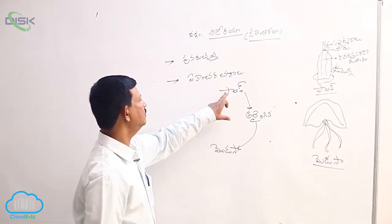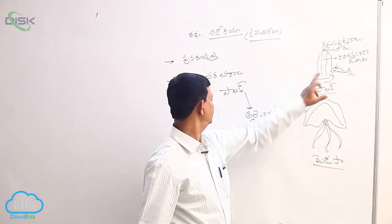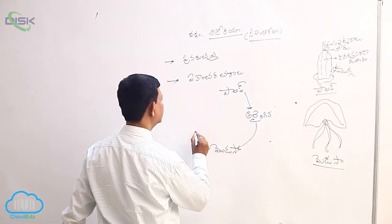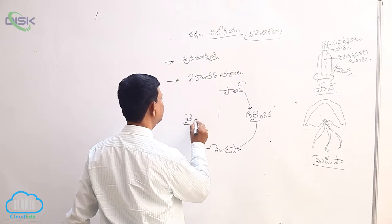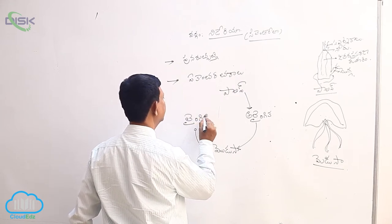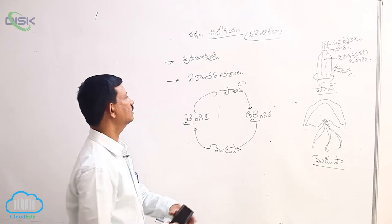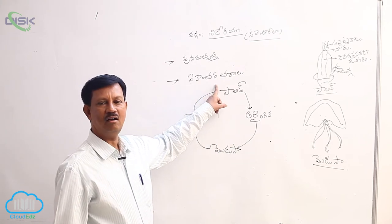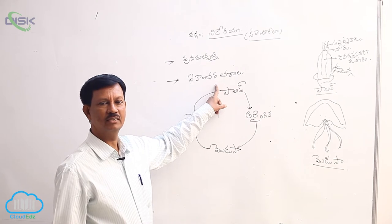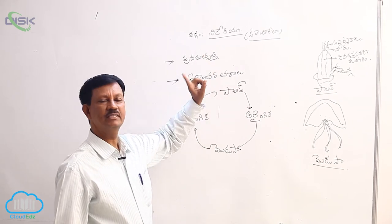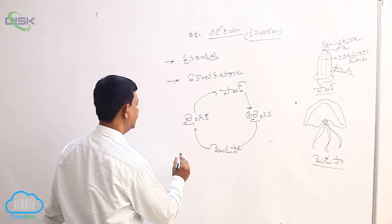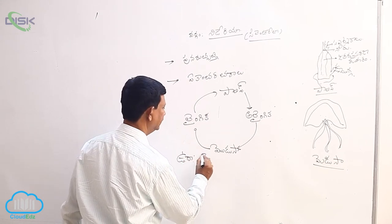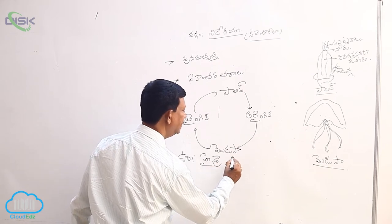This is studied from polyp forms. The most important examples include Hydra, Obelia, and polyp forms.